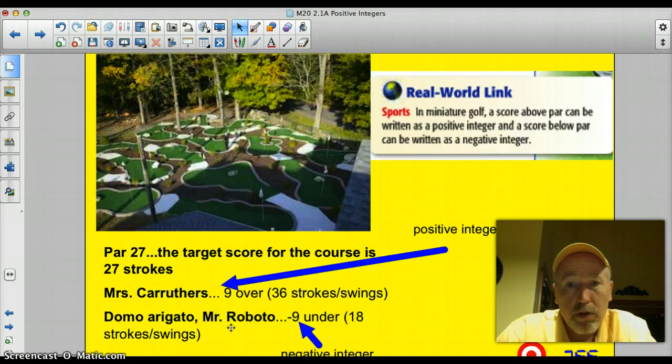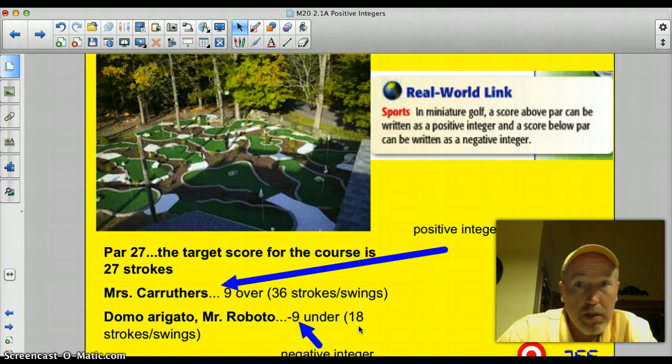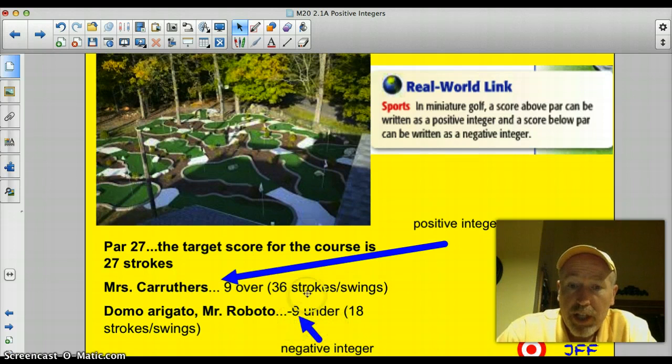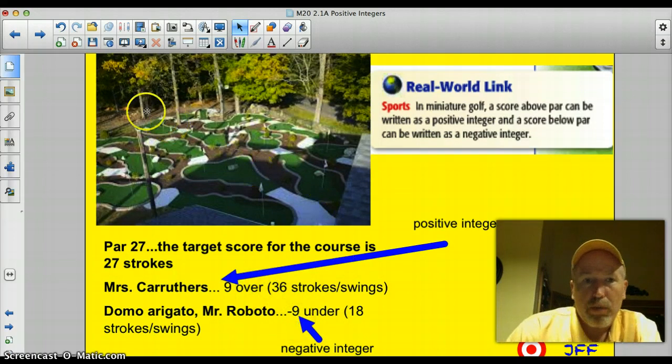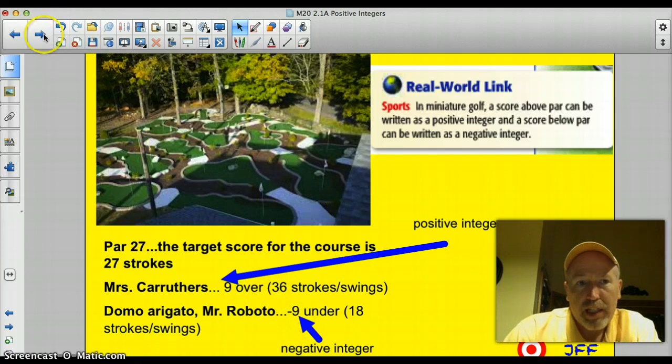Domego Oregato, Misto Robato scored negative 9, or 9 under. In other words, it took 18 less strokes or swings for me to complete the round of golf. So, that's a negative integer. In this case, the negative integer is a good thing. I won. But, a negative number and a positive number. Let's look a little bit more carefully at those on this next slide.